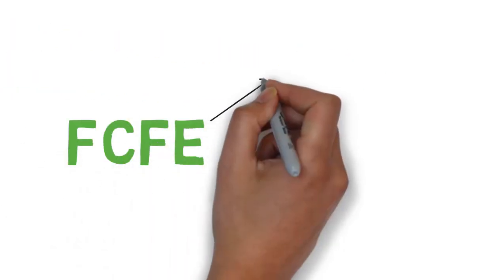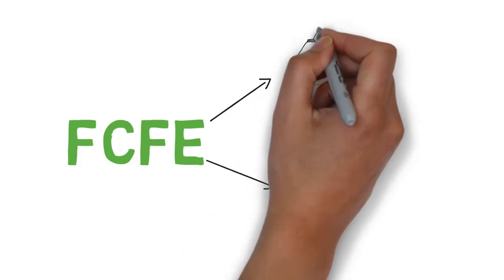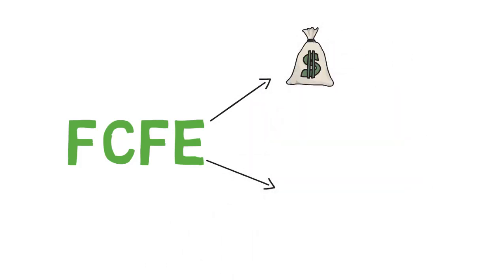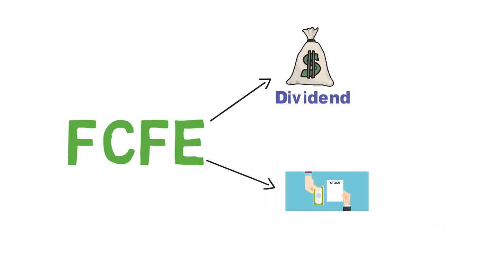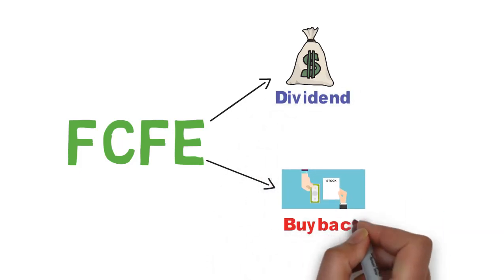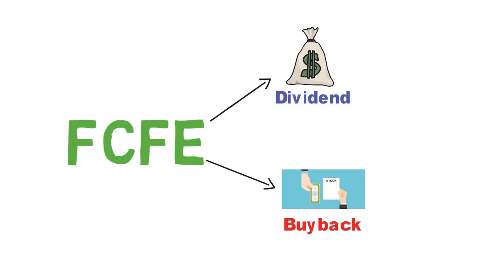In corporate finance, free cash flow to equity is a metric of how much cash can be distributed to the equity shareholders of the company as dividend or stock buybacks after all expenses, reinvestment and debt repayments are taken care of. Whereas dividends are the cash flows actually paid to shareholders, the free cash flow to the equity holder is the cash flow simply available to shareholders.